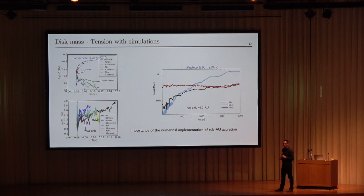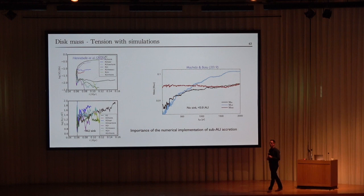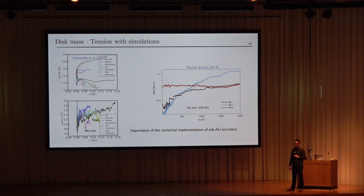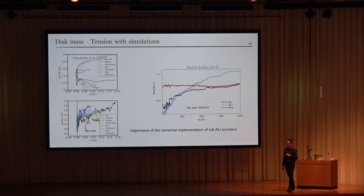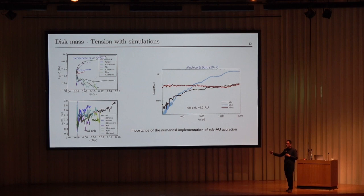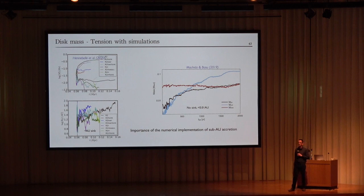Anna McLeod from Durham University: Most of what was discussed seems to be based on solar-type environments. Could you comment on magnetic braking and disk sizes in low-metallicity and low-dust-content environments, especially for massive stars? Response: I'm sorry, I cannot — but hopefully there are posters here. I know that for pop III stars in the first-star community there is evidence that non-ideal MHD can also be at play even without dust grains, but I cannot specify the exact conclusions on these effects.